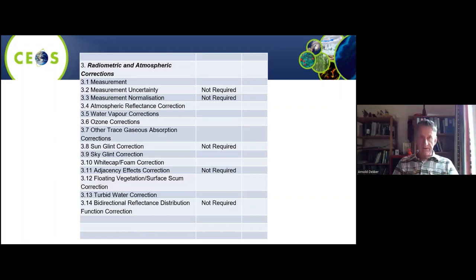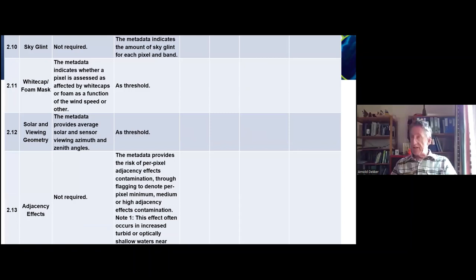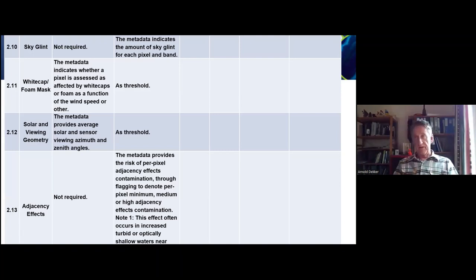Really important for remote sensing, you have to do all these atmospheric corrections. You need to know your water vapor, ozone corrections, other trace gaseous corrections — carbon dioxide, methane, and others. There are multiple pages of these metadata criteria, and then providers will self-assess against them. The metadata also provides average solar and sensor viewing geometry, which is quite logical if you think about it.